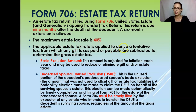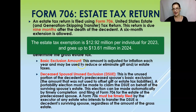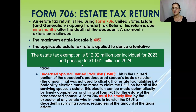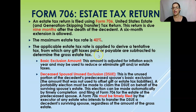The applicable estate tax rate is applied to derive a tentative tax, from which any gift tax paid or payable is subtracted to determine the gross estate tax. The basic exclusion amount — the amount you can exclude from estate tax — is $11.7 million in 2021. If you die and your assets are worth less than $11.7 million, your estate is not subject to estate tax and does not have to file Form 706.